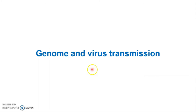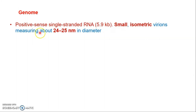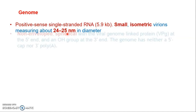Potato Leaf Roll Virus has a positive single-stranded RNA genome of 5.9 kb. Being positive-sense means that when PLRV enters the host plant, it acts directly as messenger RNA and is translated without needing to become minus-strand RNA or DNA first. It is a very small, isometric, spherical virus with a diameter of about 24 to 25 nanometers.